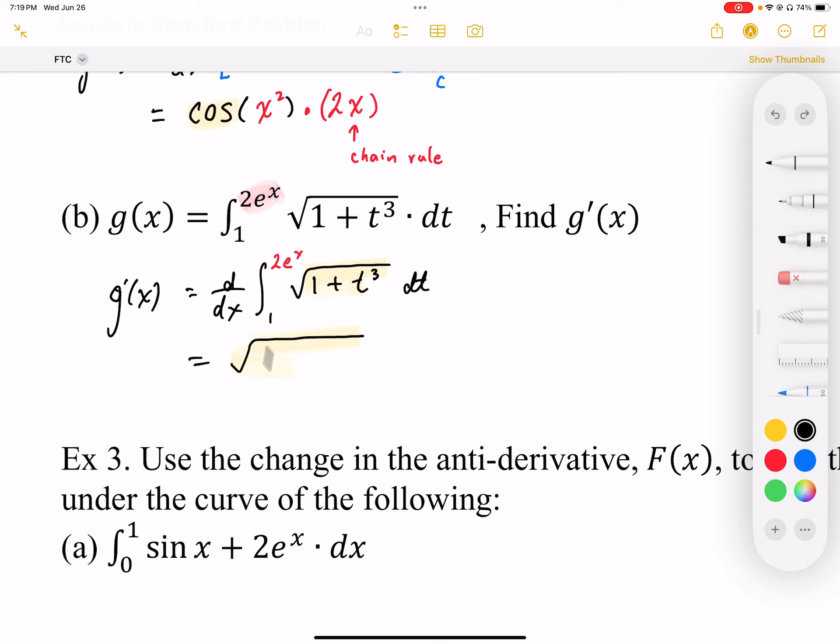The inside part is going to be the same as well: 1 plus t cubed. But inside that t, I'm going to embed my e to the x. And because that's an embedded function and I differentiated it, I just have to make sure that I apply chain rule to that.